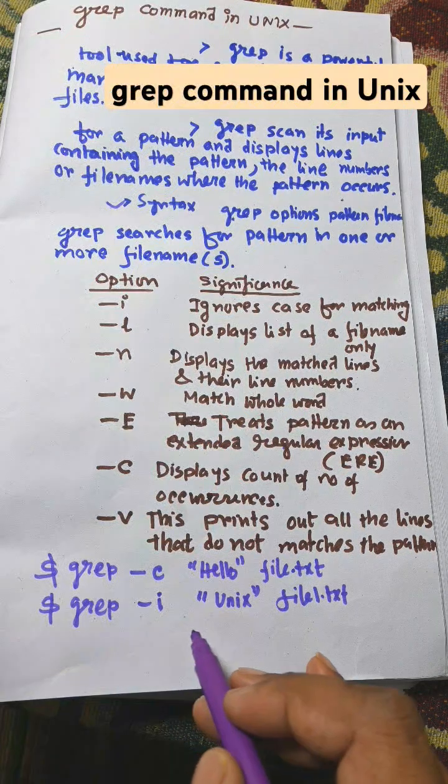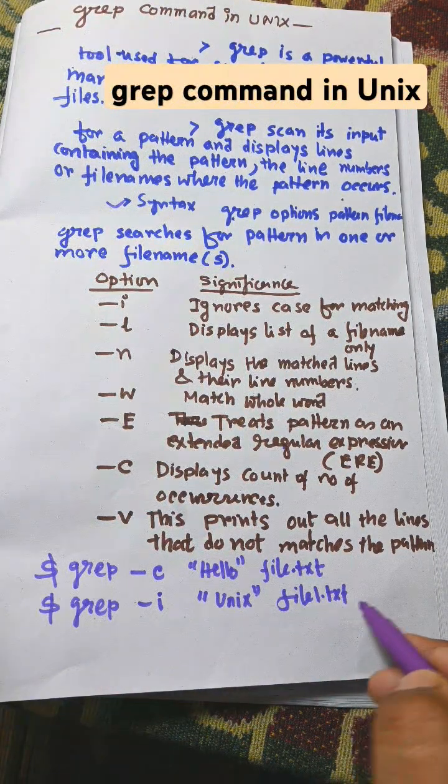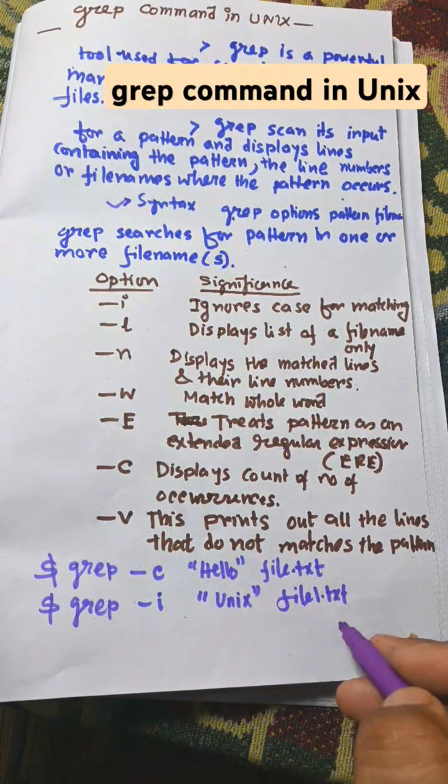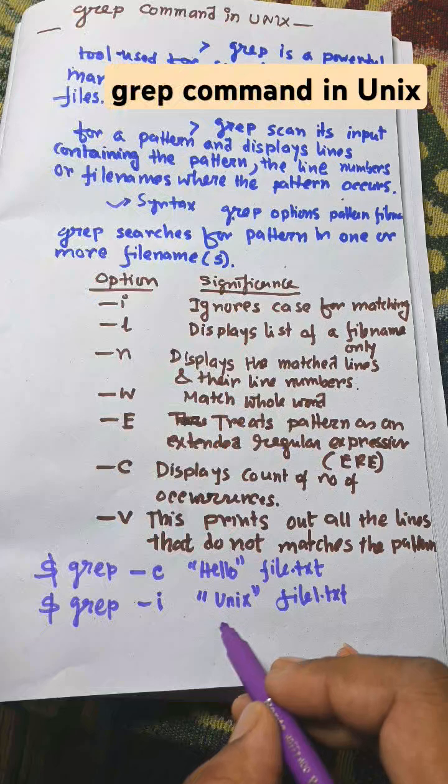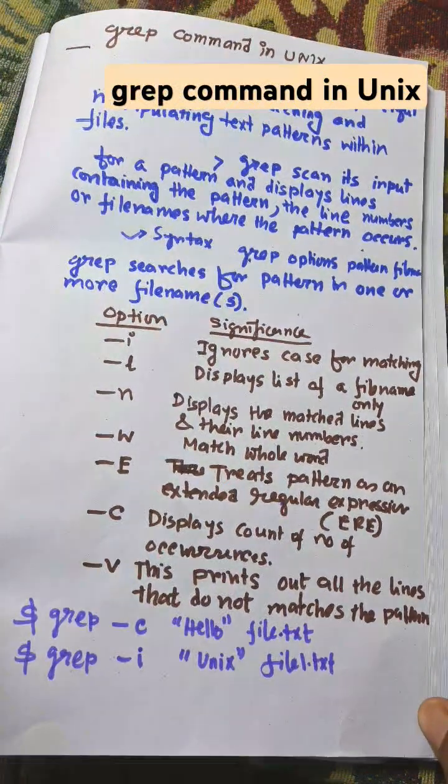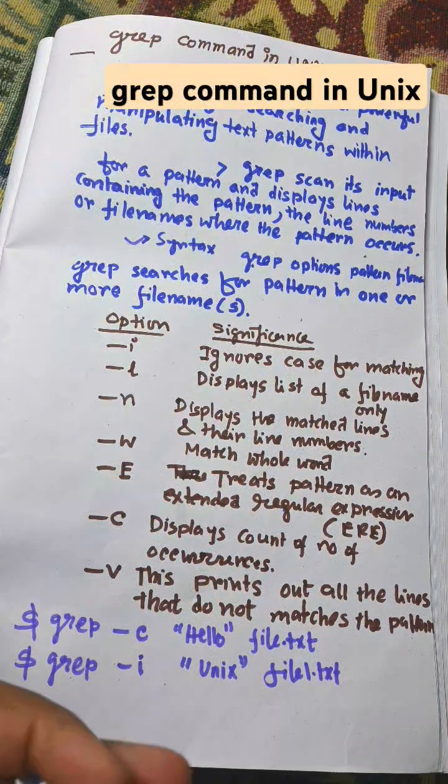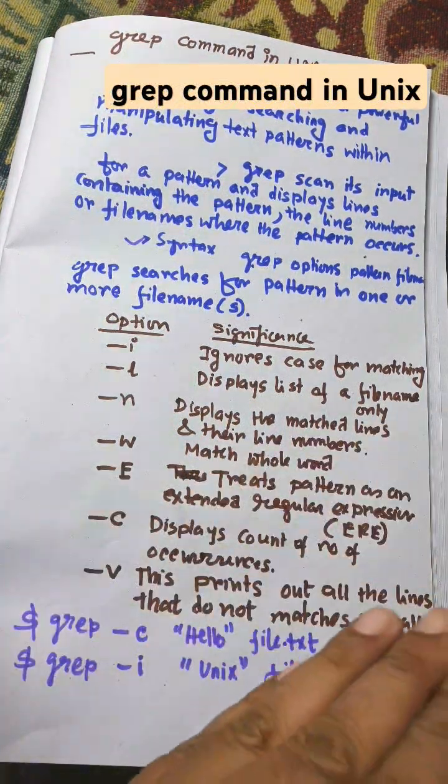GRIP hyphen i means ignore the case. Suppose any container within file1.txt is capital UNIX, it will ignore the case. This option is powerful to search UNIX word from file1.txt. So this is a very important command to search any format or any content from a specific file.